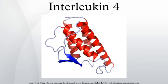The receptor for interleukin-4 is known as the IL-4Rα. This receptor exists in three different complexes throughout the body. Type 1 receptors are composed of the IL-4Rα subunit with a common γ-chain and specifically bind IL-4. Type 2 receptors consist of an IL-4Rα subunit bound to a different subunit known as IL-13Rα1. These type 2 receptors have the ability to bind both IL-4 and IL-13, two cytokines with closely related biological functions.